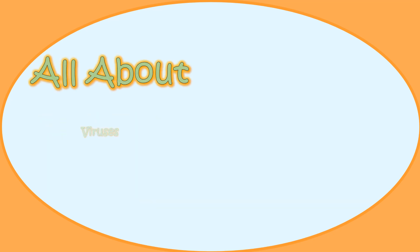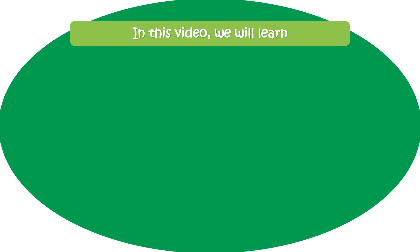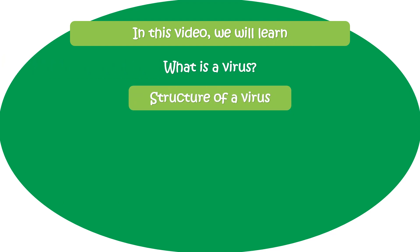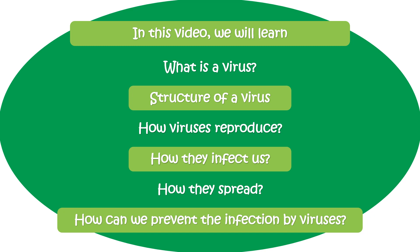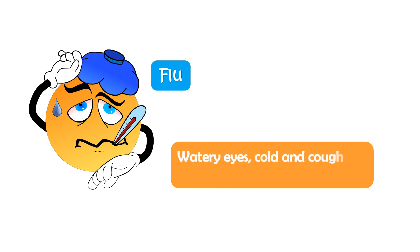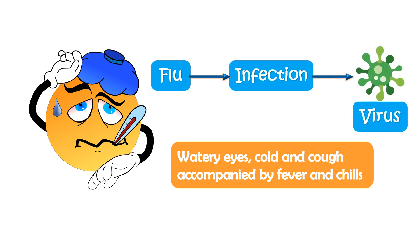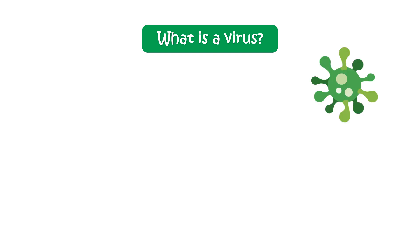In this video we will learn what is a virus, the structure of a virus, how viruses reproduce, how they infect us, how they spread, and how we can prevent infection by viruses. Most of us have had a flu — watery eyes, cold and cough accompanied by fever and chills. Do you know what causes a flu? Well, a flu may be caused by an infection by a virus. But what is a virus?